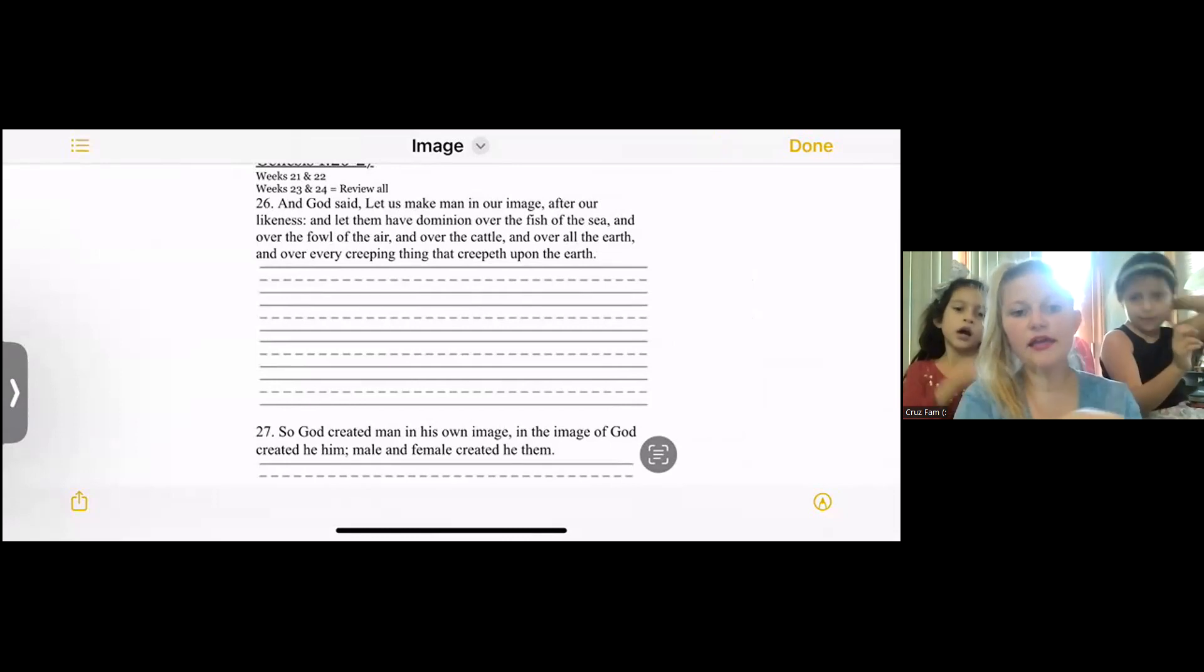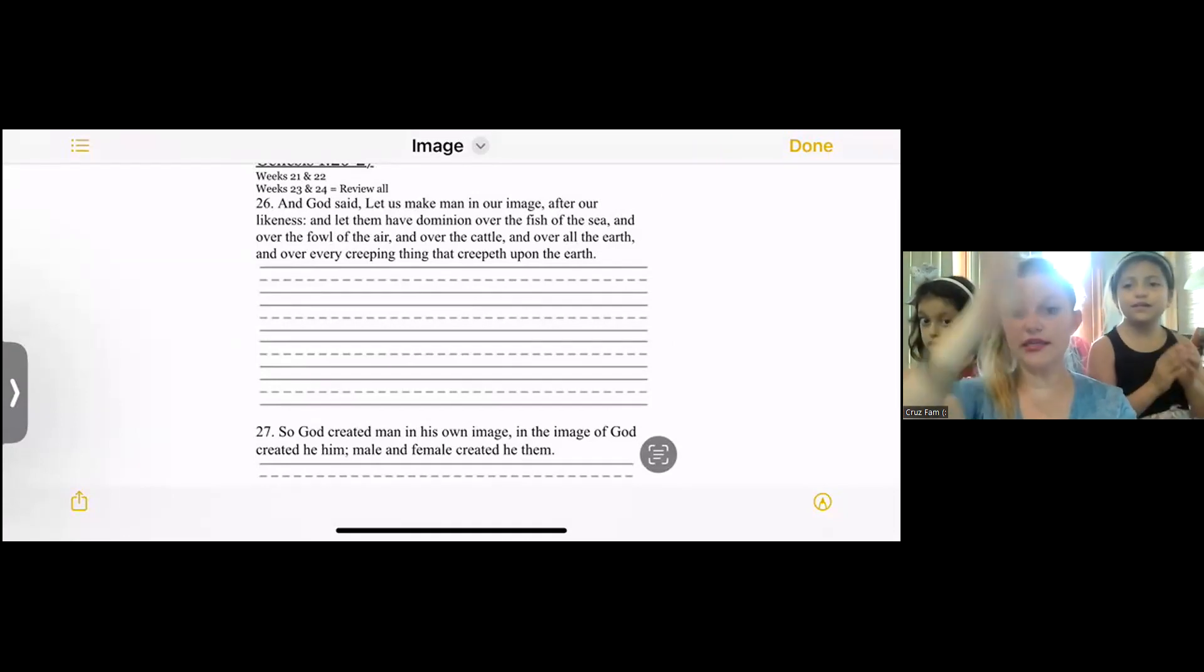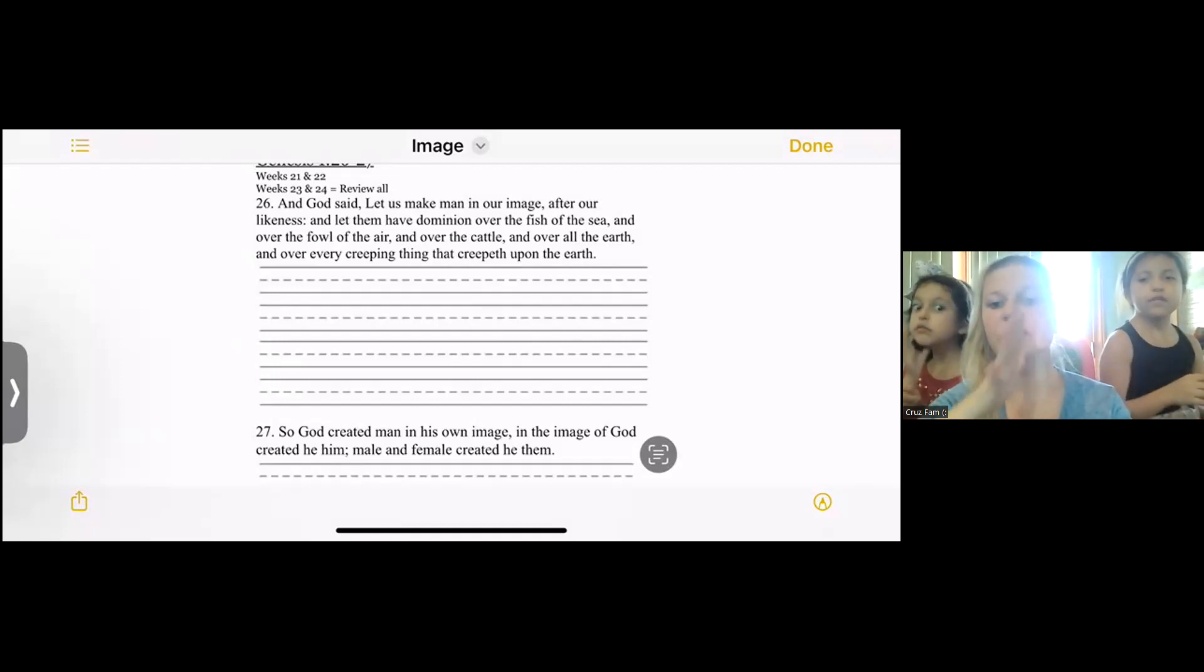And God said, Let us make man in our image, after our likeness, and let them have dominion over the fish of the sea, over the fowl of the air, over the cattle, and over all the earth, and over every creeping thing that creepeth upon the earth. So God created man in his own image. In the image of God created he him, male and female created he them.